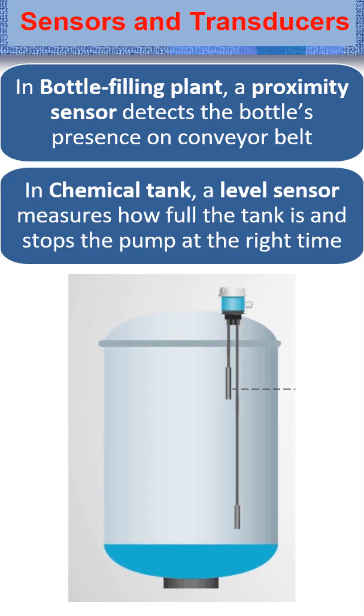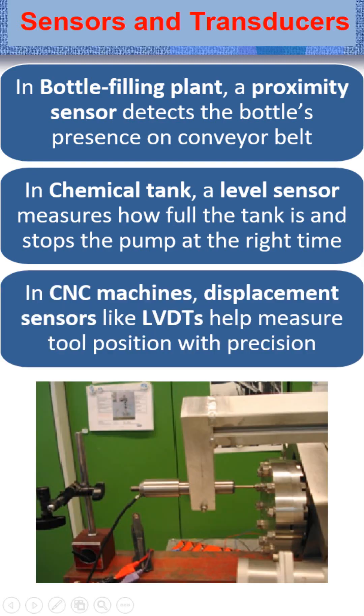In a chemical tank, a level sensor measures how full the tank is and stops the pump at the right time. In CNC machines, displacement sensors like LVDTs help measure tool position with precision.